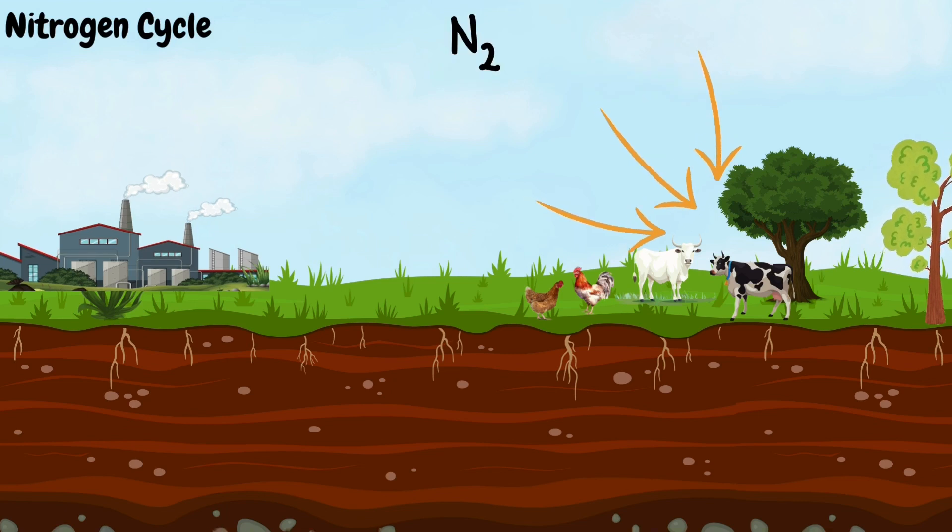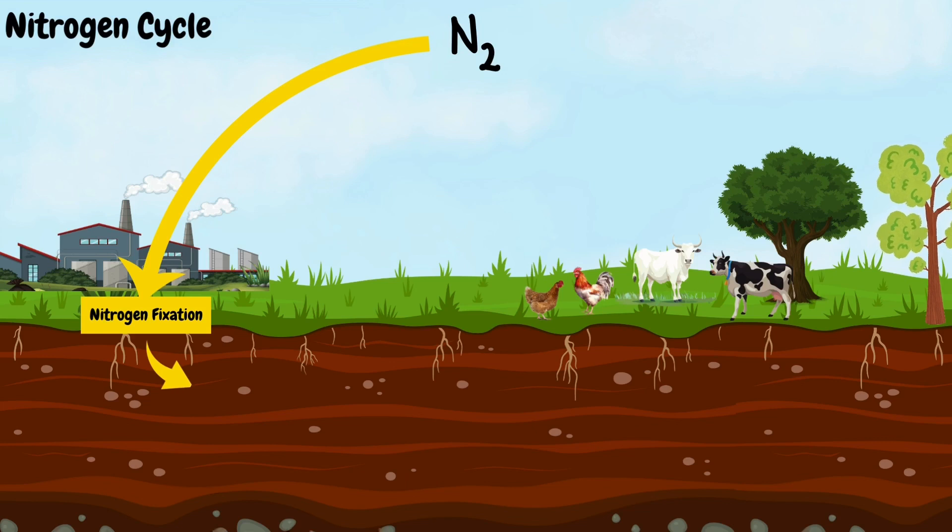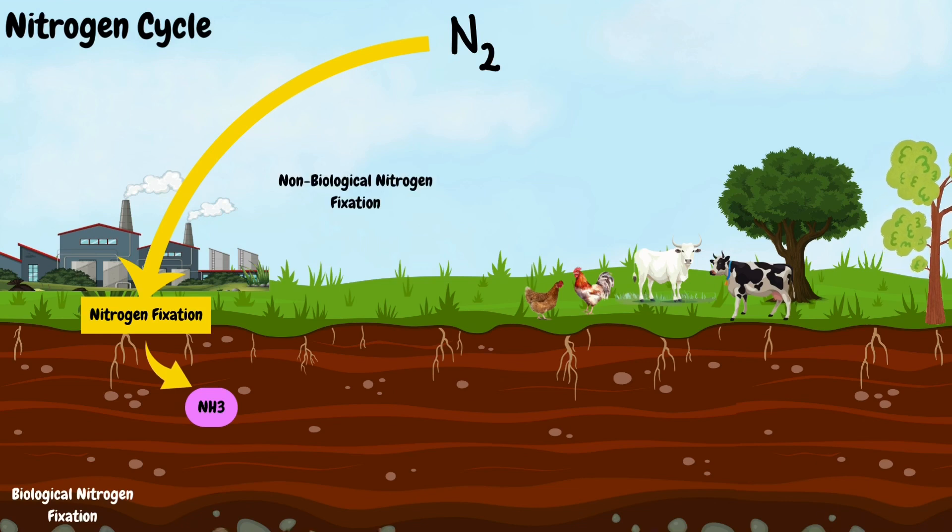To become accessible to living organisms, atmospheric nitrogen must undergo nitrogen fixation. This process involves converting nitrogen gas into ammonia. Nitrogen fixation can occur through both biological and non-biological processes.